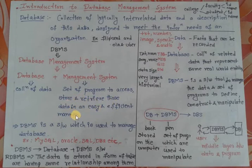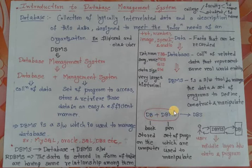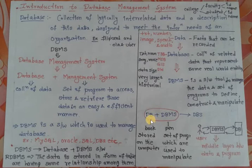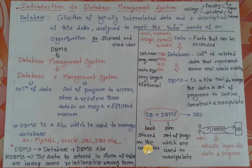The proper definition of DBMS: a collection of data and a set of programs to access, store, and retrieve that data in an easy and efficient manner. Database (DB) + DBMS combined gives us DBS. As a real-time analogy: a book is like a database, and a pen manipulating the book represents the management system — the set of programs used to manipulate it.